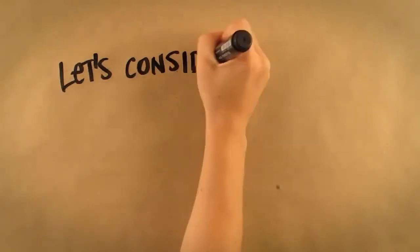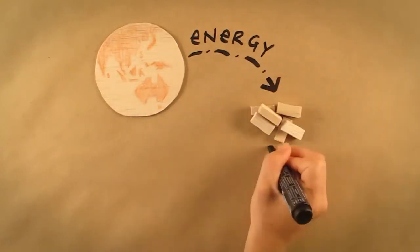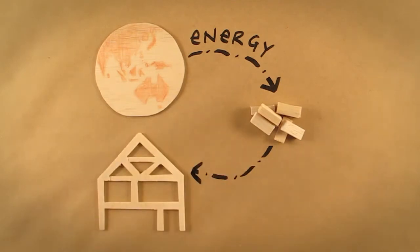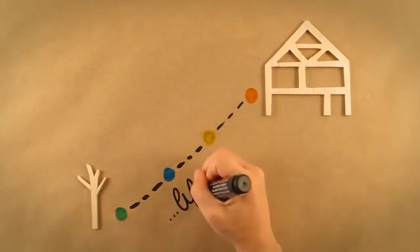Now let's consider the energy used from cradle to product. We have mentioned several times that energy is needed to extract or harvest natural resources and process them into usable goods. Energy is also used in the construction of finished products such as school buildings and houses. The total energy used from cradle to product is studied through life cycle assessments.